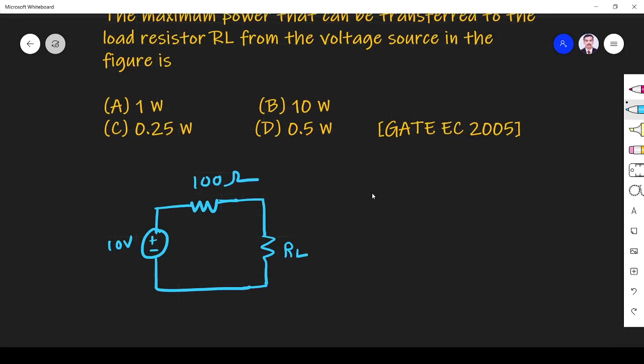We know that in order to have maximum power transfer, RL should be equal to R-thevenin. You can compare this with the Thevenin equivalent circuit. It is appearing like V-thevenin, this is appearing like R-thevenin. So for maximum transfer, RL must be equal to R-thevenin.